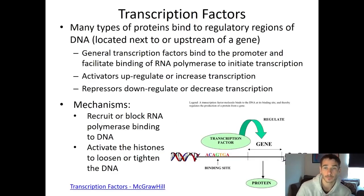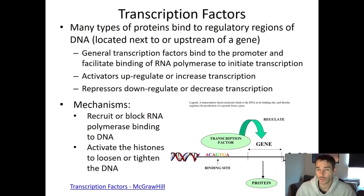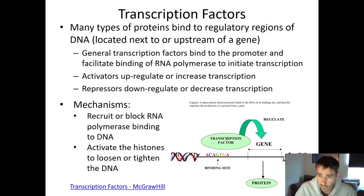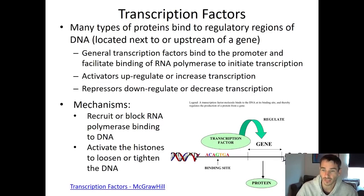The first way that genes are regulated is transcription factors. There are a lot of different kinds of proteins that bind to what we call regulatory regions of DNA. Right before a gene, there's a regulatory region that will help determine whether the gene is turned on or off. A transcription factor can bind there and either turn on or turn off the gene — kind of like a light switch.